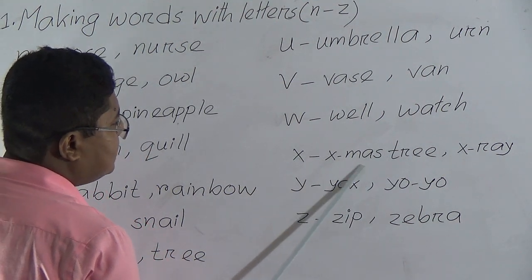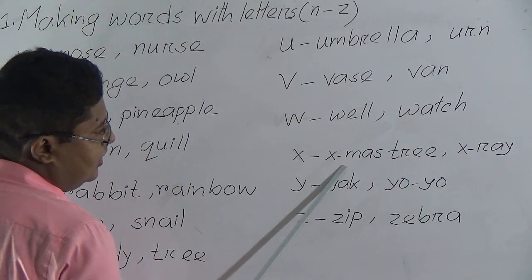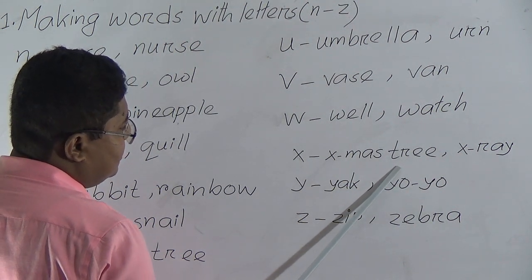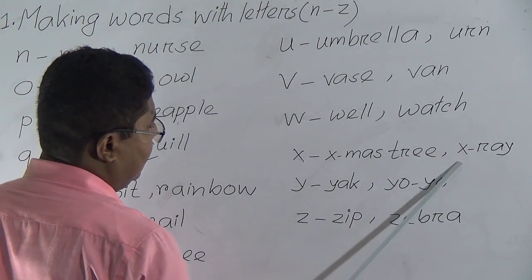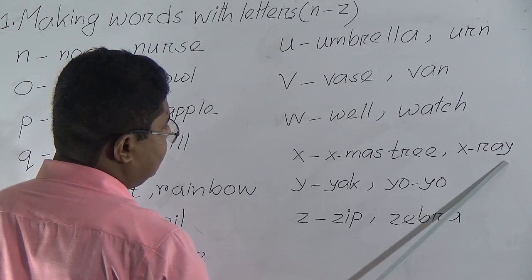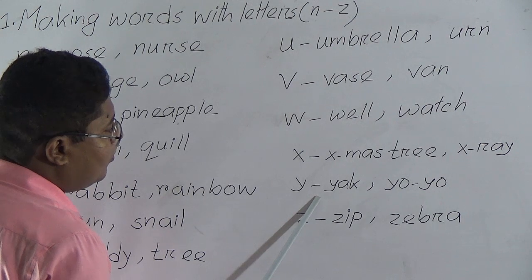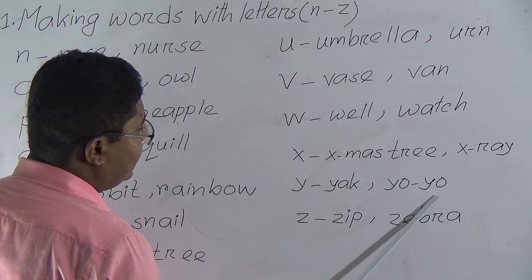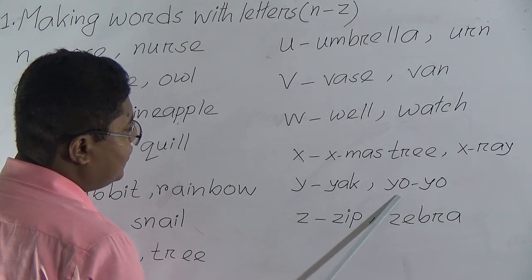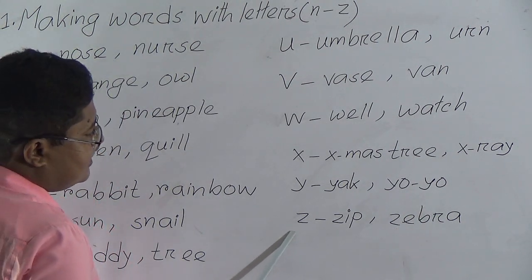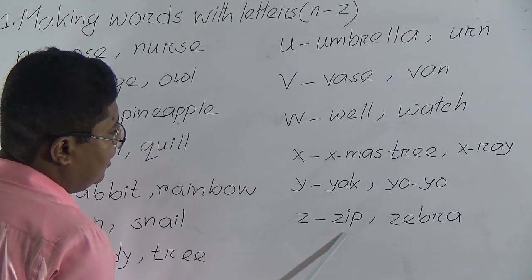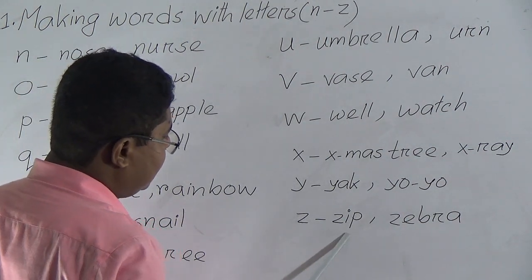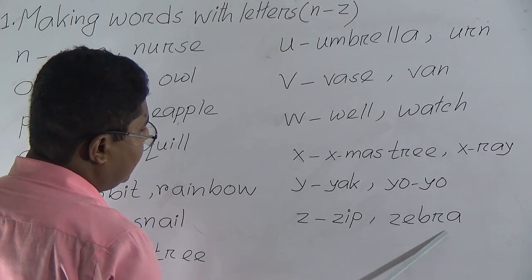X for X-mas tree. X, M-A-S mass, then tree, T-R-E-E. X-ray, X-R-A-Y. Y for yak, Y-A-K. Y for yo-yo, Y-O hyphen Y-O, yo-yo. Last one: Z for zip, Z-I-P. Z for zebra, Z-E-B-R-A, zebra.